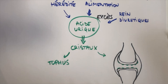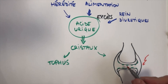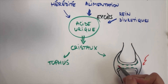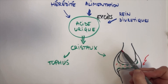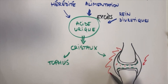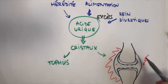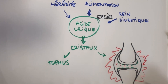À l'occasion de certains facteurs déclencheurs, les cristaux vont être mobilisés, perturber l'articulation et générer une réaction inflammatoire. L'articulation devient rouge, chaude, très douloureuse et gonfle. C'est la crise de goutte.